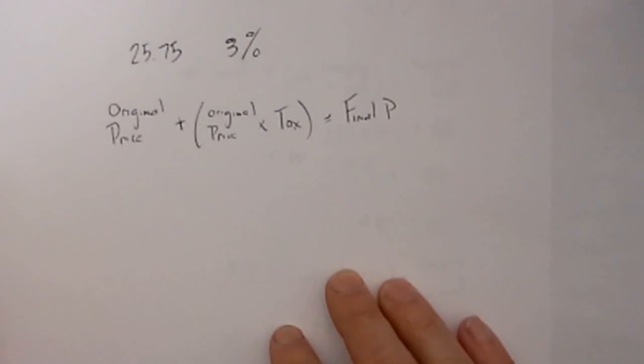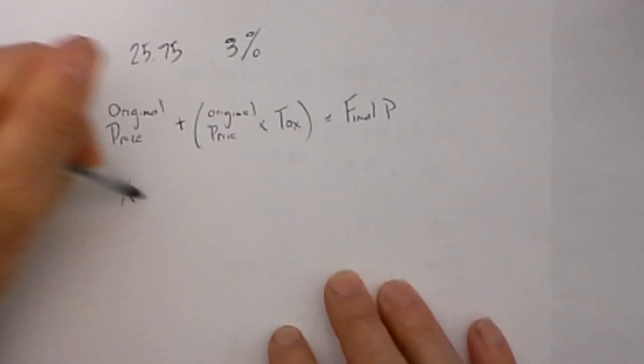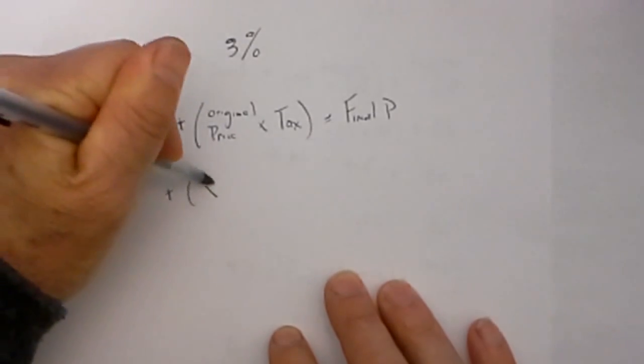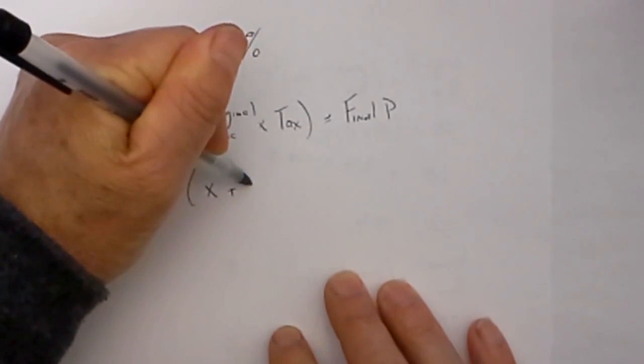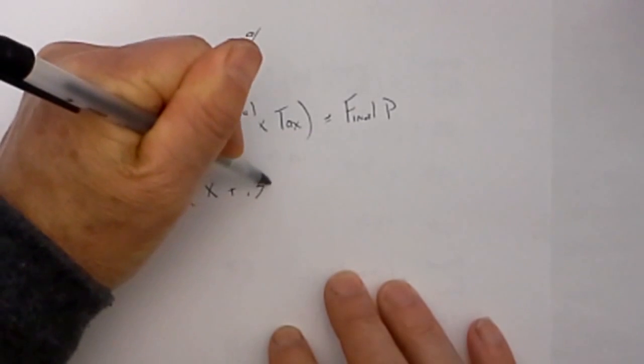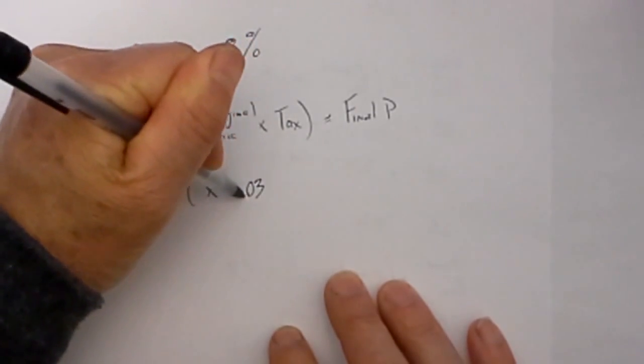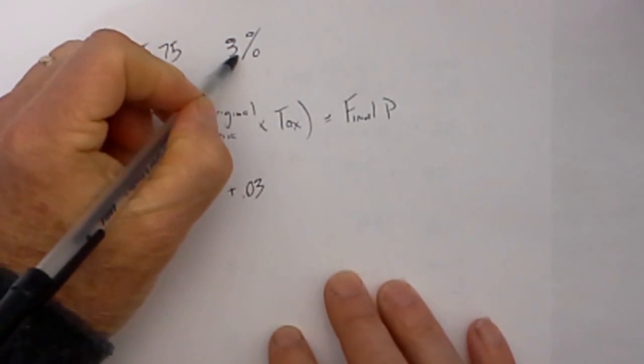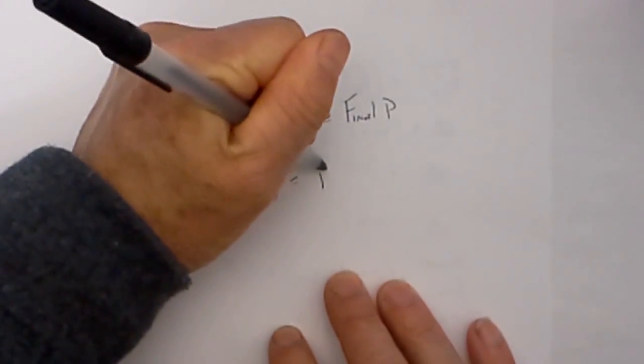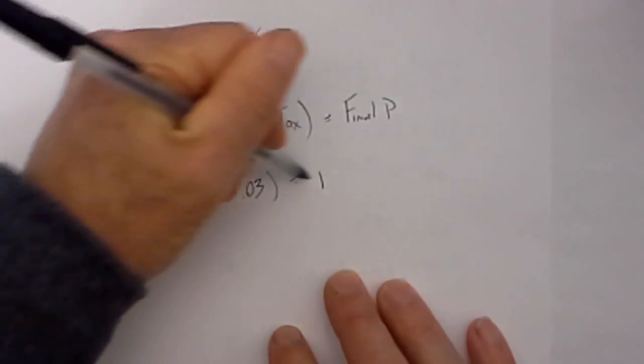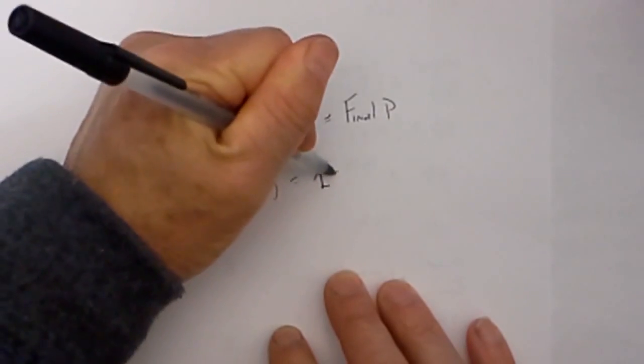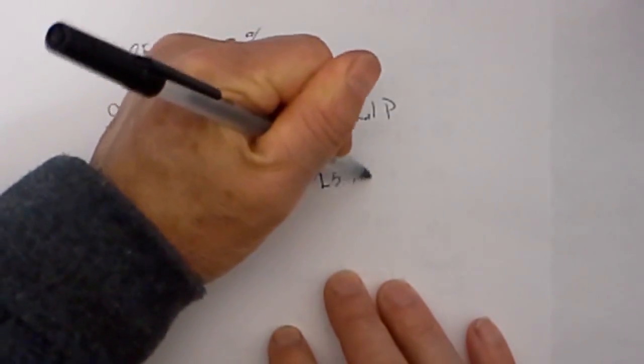So let's just plug in what we know. We know that the original price is what we are trying to find, so that is x. Plus the sales tax is 3% and I will write it as a decimal 0.03, move the decimal places 2 to the left, equals our final price and our final price is $25.75.